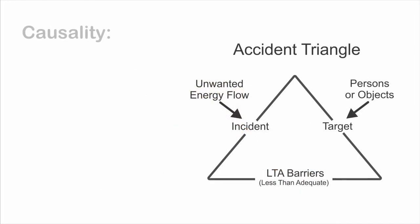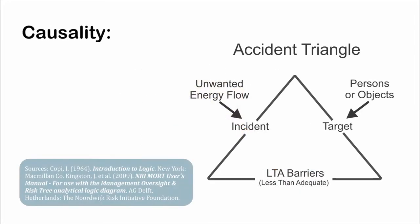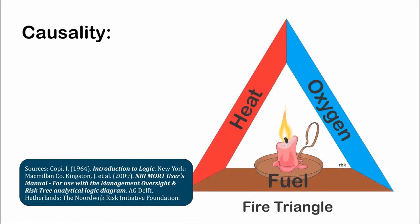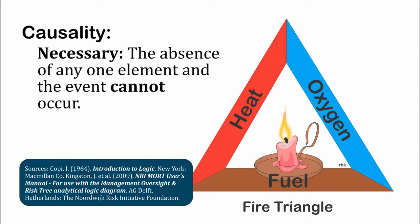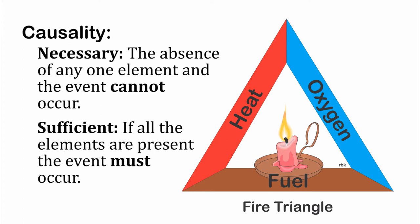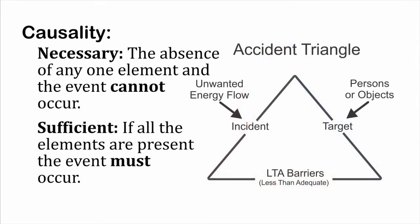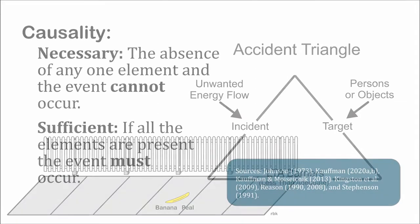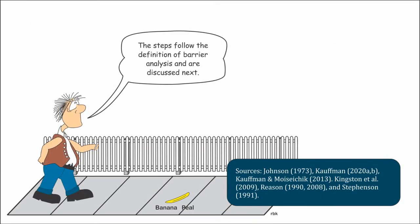A strength of barrier analysis is that its components are considered causal. Using the familiar fire triangle, 'necessary' means that if one of the components is not present, fire will not occur — likewise, an accident will not occur. 'Sufficient' means that if all of the components are present, a fire must occur — similarly, an accident must occur.